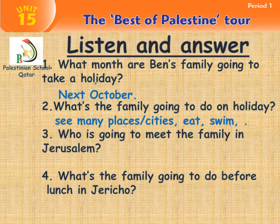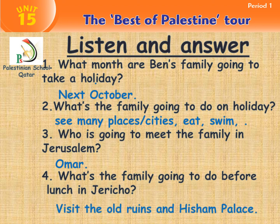Number 2: what is the family going to do on holiday? Yes — very good, see many places and cities, eat, swim in the sea, float in the Dead Sea, and so on. Number 3: who is going to meet the family in Jerusalem? Omar. Number 4: what is the family going to do before lunch in Jericho? Yes — they are going to visit the old ruins and Hisham Palace.